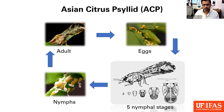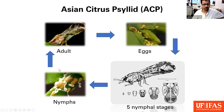So when spring growth comes up, there are fewer psyllids to enter that new growth and increase their populations. As they develop, they go through five nymphal instars in the nymphal stage — here you can see the mature nymphs on screen — and then they transform into adults again. The whole life cycle, depending upon temperature, takes about three to four weeks, and there are several generations during the year.